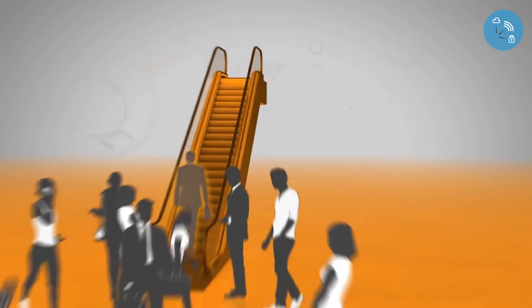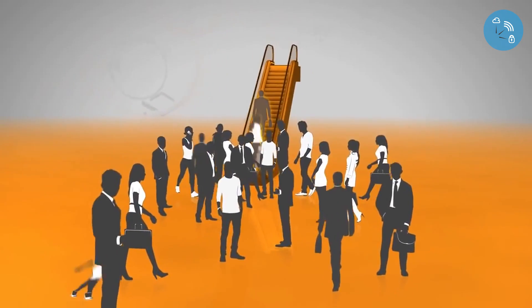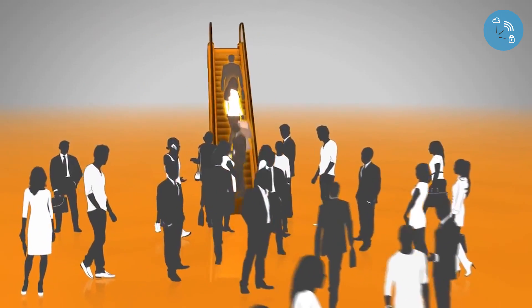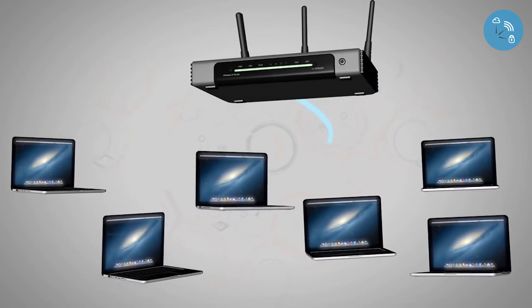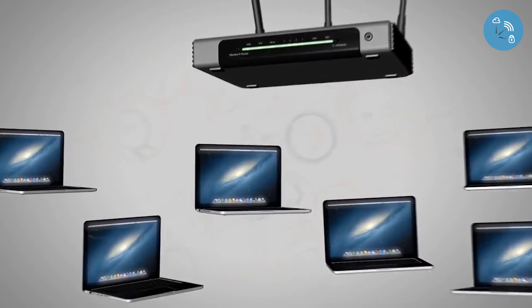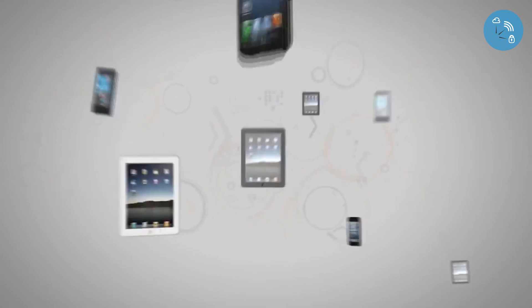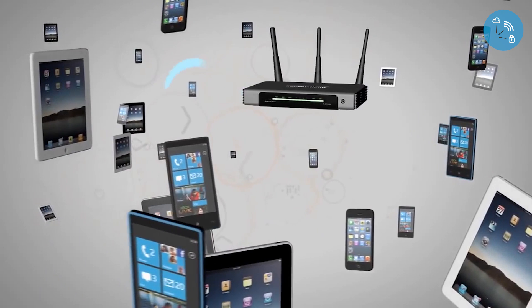Wi-Fi uses a shared medium, just like a group of people trying to get on an escalator at the same time. Instead of a wire that carries data to each device, Wi-Fi channels are shared among all devices. Devices have become smaller and increased in number, creating performance problems for everyone. It all comes down to physics.